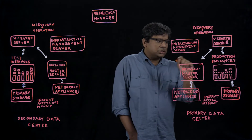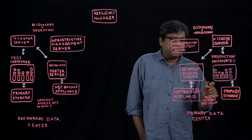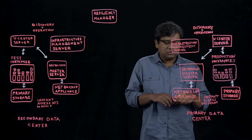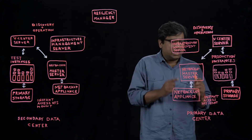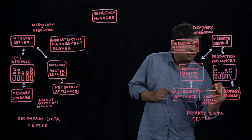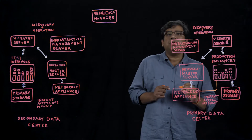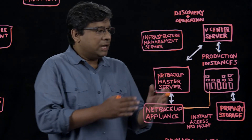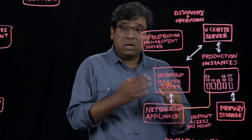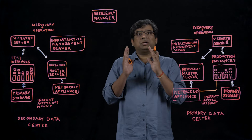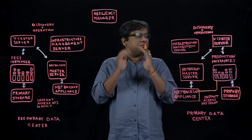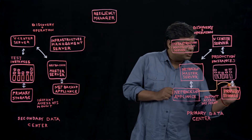From a NetBackup deployment point of view, you have a NetBackup master, NetBackup appliances, and at the time of instant access, we have the Veritas provisioning file system which gets mounted into your target production environment and you can access the VMs almost instantly. When you want to transition the recovered environment on the provisioning file system, you do a storage vMotion.